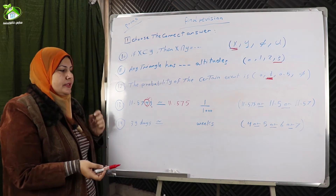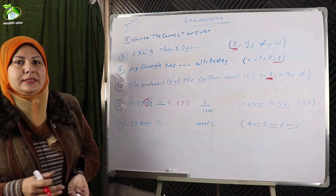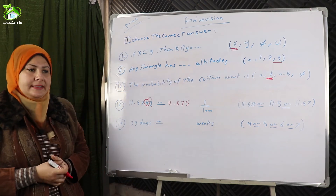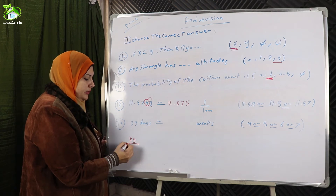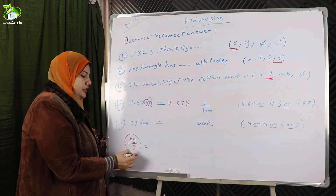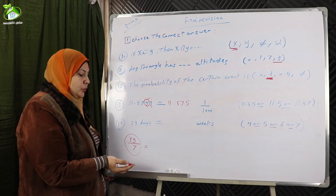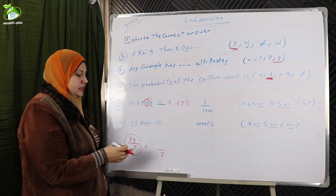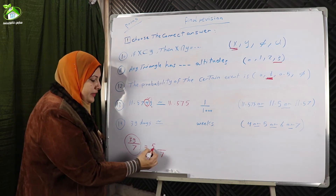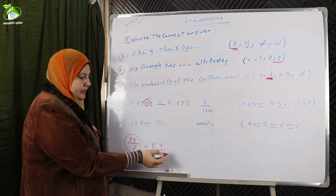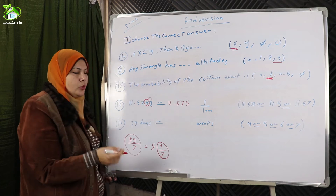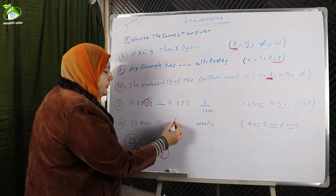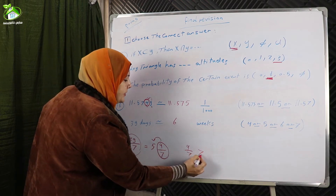Number fourteen: 39 days rounded to the nearest week. We know that one week equals seven days. To convert from days to weeks, we divide by seven. Thirty-nine divided by seven equals five with a remainder of four. Since four-sevenths is more than half, four-sevenths will round five up to six weeks.